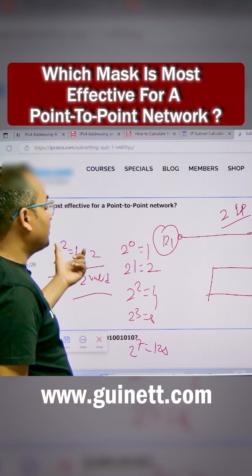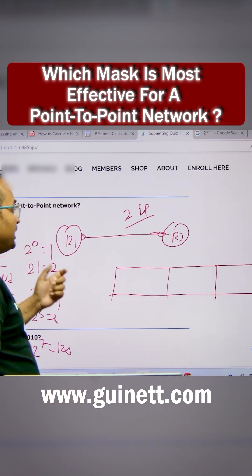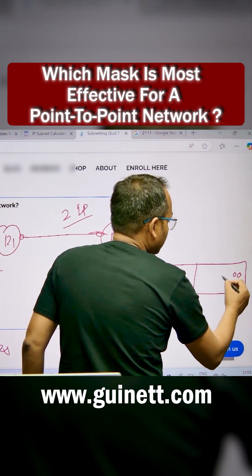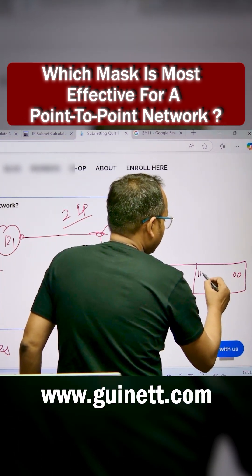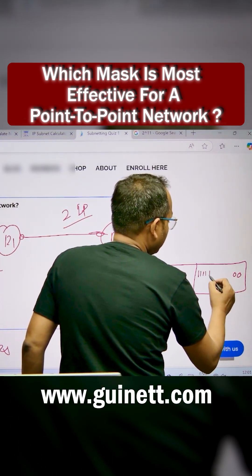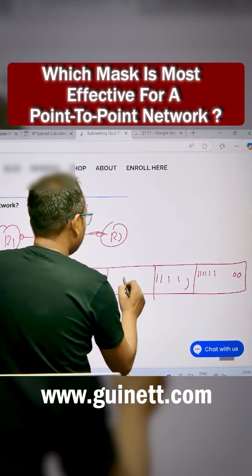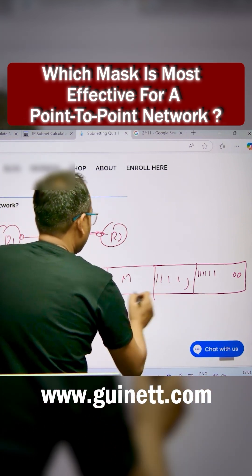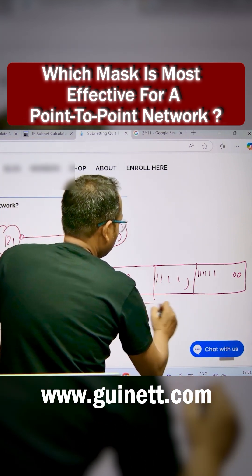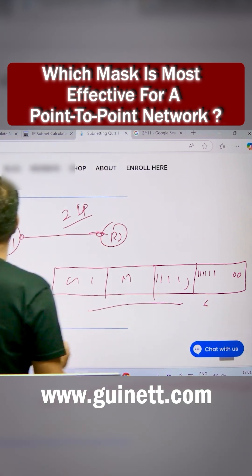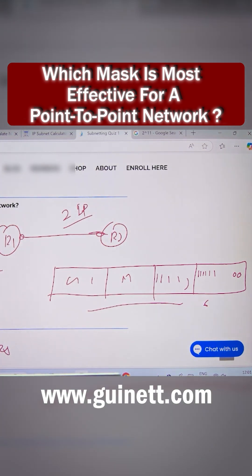The block size should be 4, meaning I need to turn on two bits. I need to make the off bits there, and the rest are going to be all 1s — 1, 1, 1, 1, 1, 1, 1, 1. So this is going to be 24 plus 6, which equals 30. So the answer is /30. Point-to-point requires just only two IP addresses.